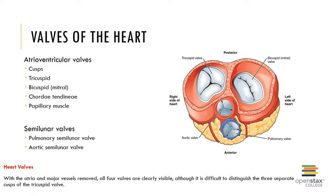The atrioventricular valves, also called AV valves, separate each atrium from its corresponding ventricle. The free edge of each valve consists of two or more flaps called cusps, which are attached to tendinous connective tissue fibers called chordae tendineae. These fibers originate at conical muscular projections called papillary muscles. The chordae tendineae and papillary muscles work together to prevent inversion of the AV valves during contraction and thereby prevent backflow.